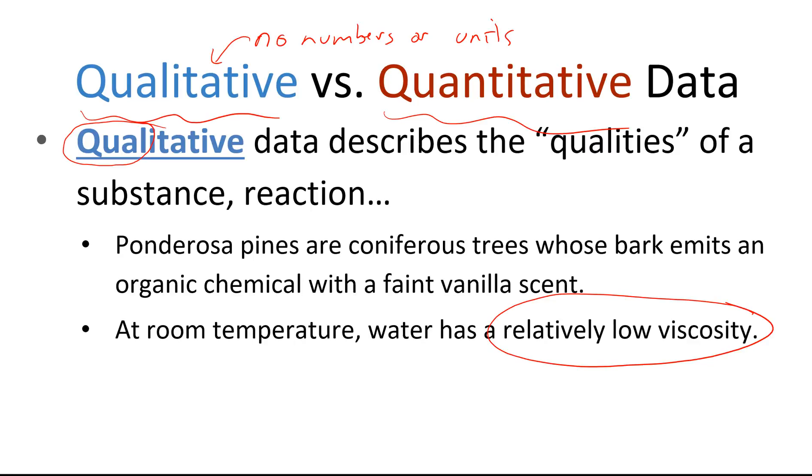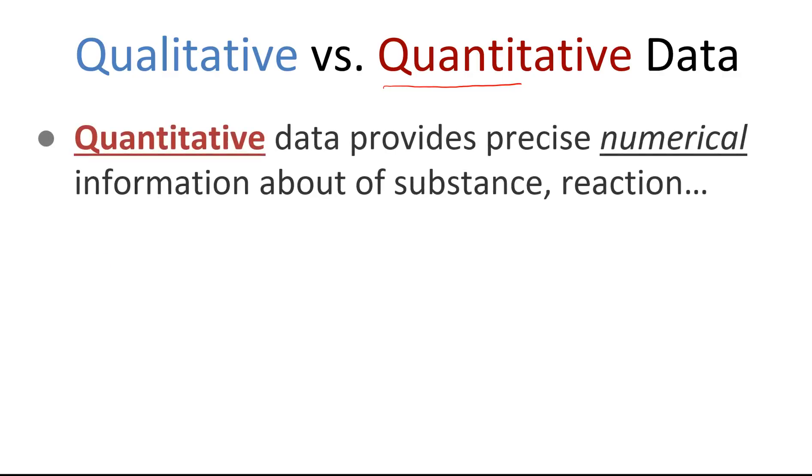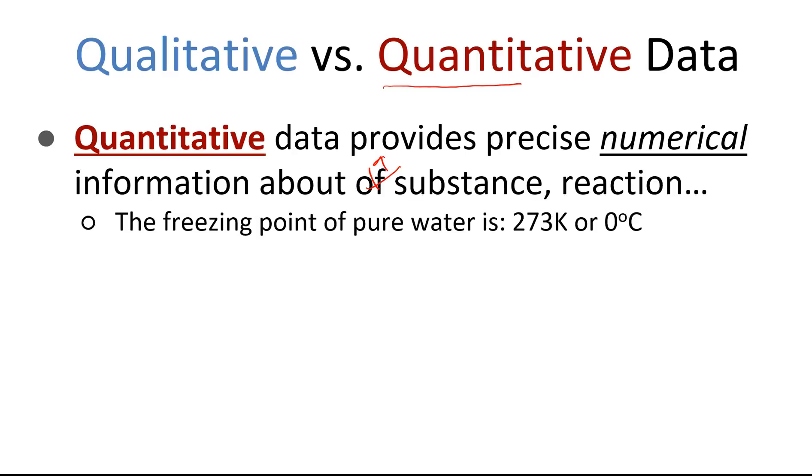Now, to contrast that, quantitative data. We are referring to the quantitative or quantity of something. That prefix is important. So it provides precise numerical information about a substance or reaction, et cetera. So if I was to tell you that the freezing point of pure water is 273 kelvin or 0 degrees Celsius, that's a quantitative measurement. And the reason it's a quantitative measurement is we have a number attached to a unit.